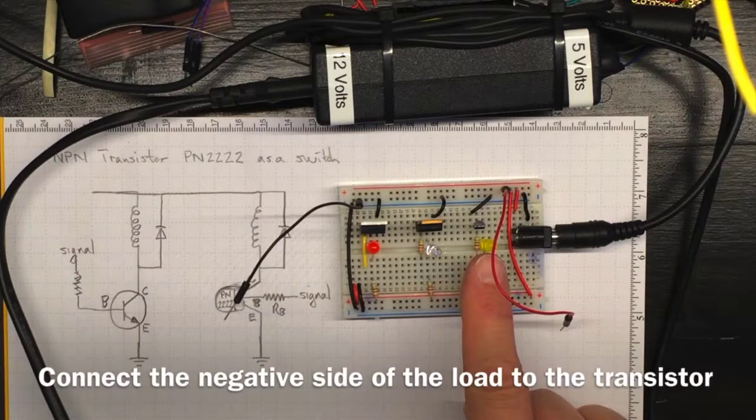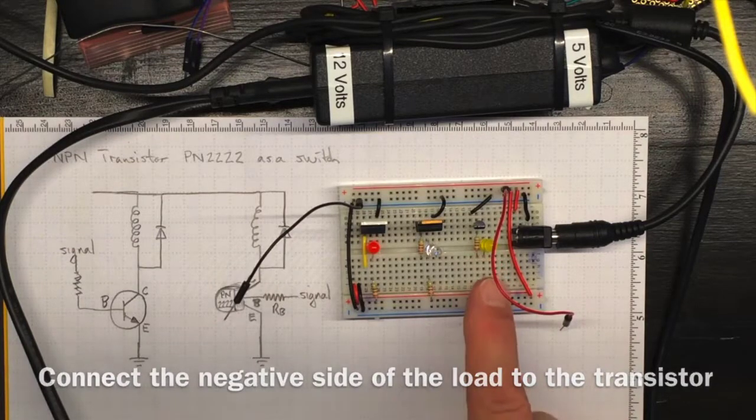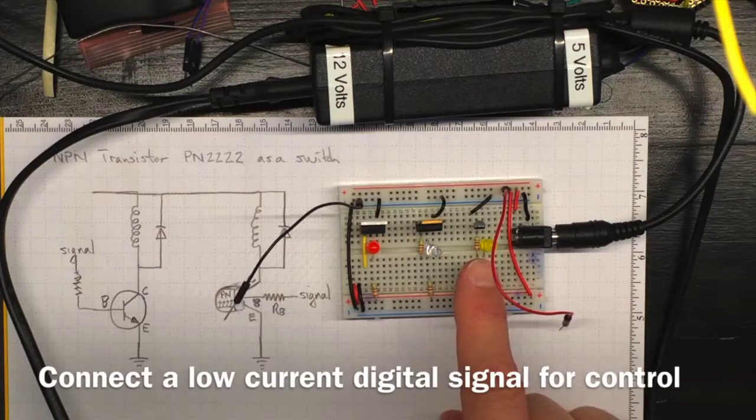This is the lowest power option. This is a PN2222 NPN transistor.